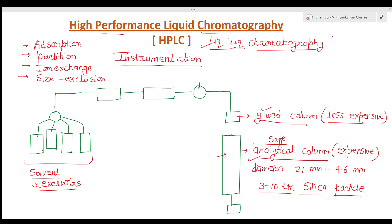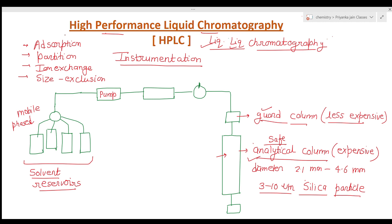The mobile phases are passed through a pump. By the action of this pump, the solvents are moved forward. There is a pulse damper acting as a valve that passes exactly the specific solvent required. Then there is a loop injector — the sample is introduced into the HPLC columns using this loop injector. The sample first passes to the guard column, where impurities are retained, and then the purified solute proceeds to the expensive analytical column.